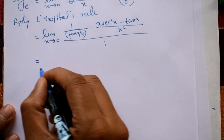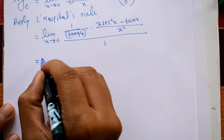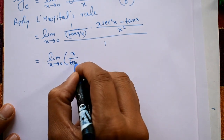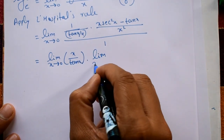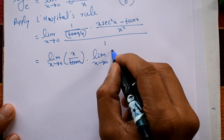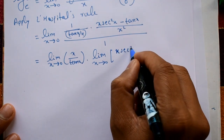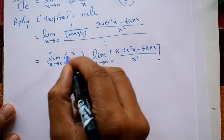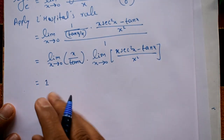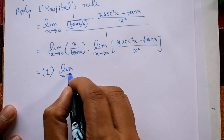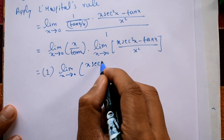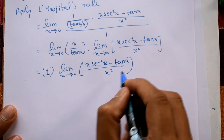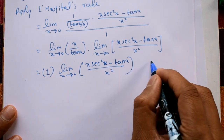This simplifies to (1 / (tan x / x)) times (x·sec²x − tan x) / x², which equals (x / tan x) times (x·sec²x − tan x) / x². Separating the limits: limit x→0 of (x / tan x) equals 1. The remaining limit is x tends to 0 of (x·sec²x − tan x) / x², which again gives 0/0 form.